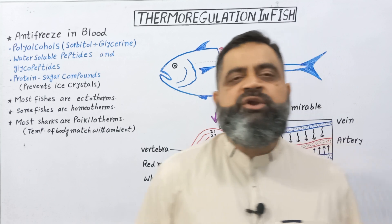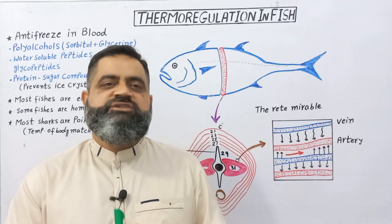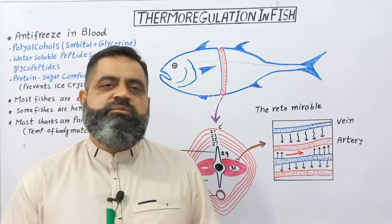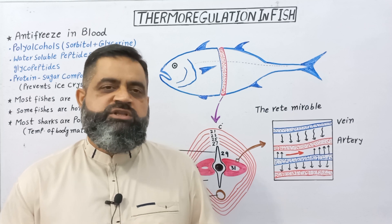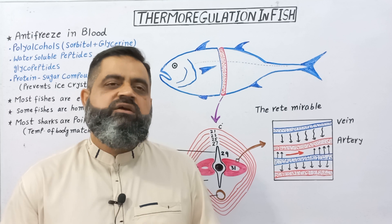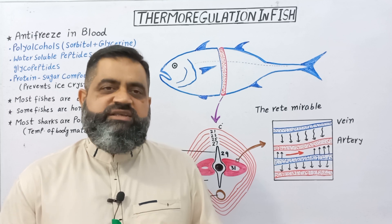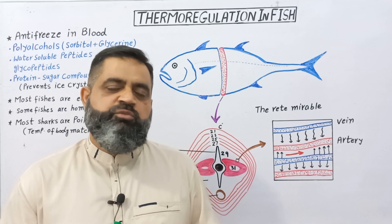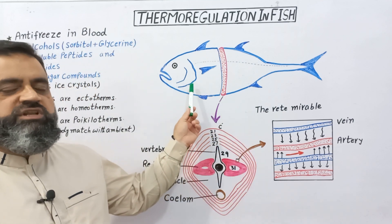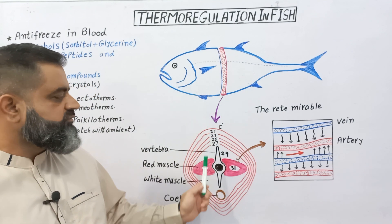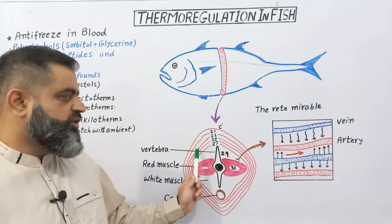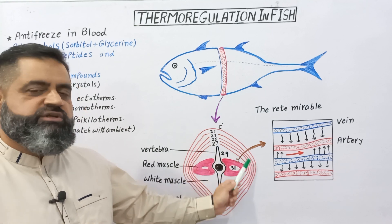Some fishes, like tuna fish, have special adaptations to maintain their internal body temperature. These fishes usually maintain a higher body temperature in the center, while a lower temperature in the periphery of the body. For example, tuna fish which live in cold water usually maintain a higher body temperature in the center and a lower body temperature in the periphery.